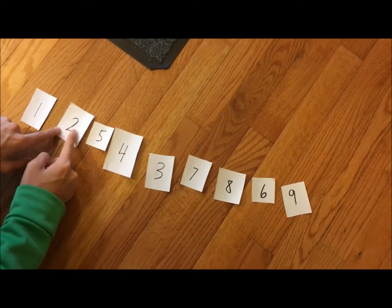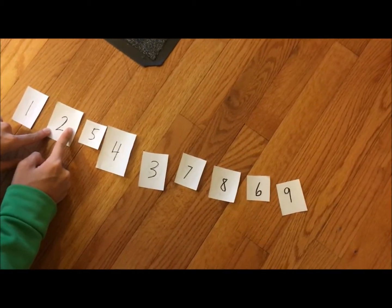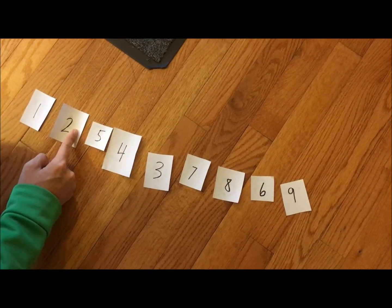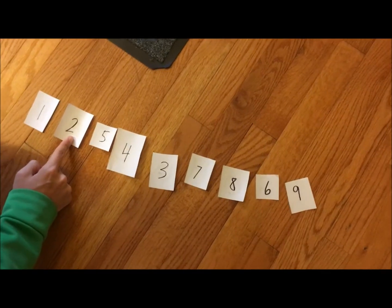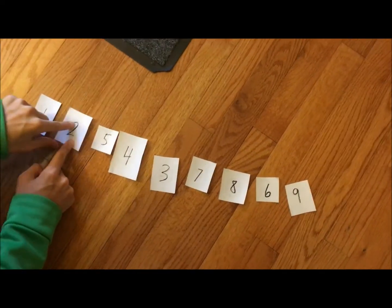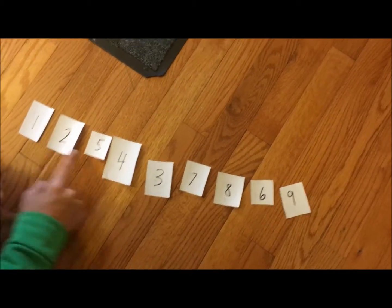Then we'll start at the next number, two. Two is the second number on the number line, and nothing else is smaller than two, so it'll stay where it is.